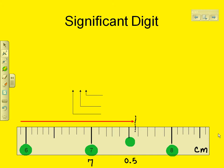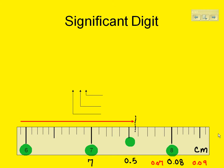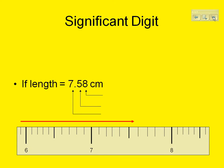I'm going to say that measurement is 0.08 centimeters. You might say it's 0.07 centimeters or perhaps 0.09 centimeters. That last digit is the uncertain digit — it's what you decide is the best measurement. If the measurement is 7.58, the first two digits are exact, and the third one has a slight error to it.